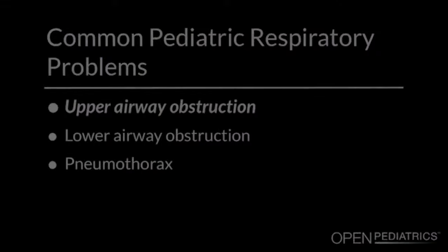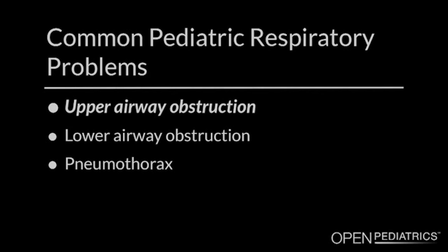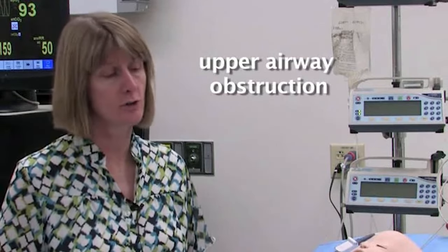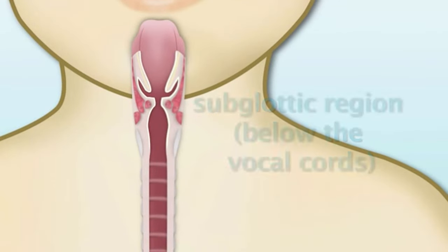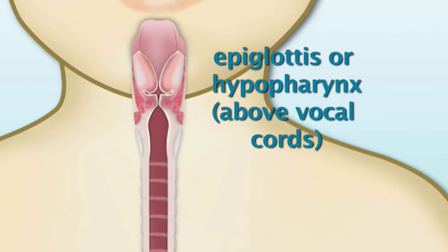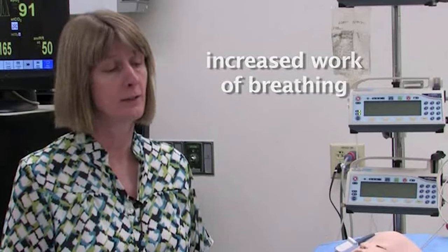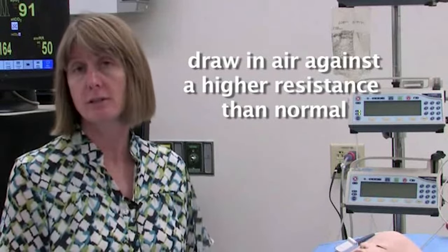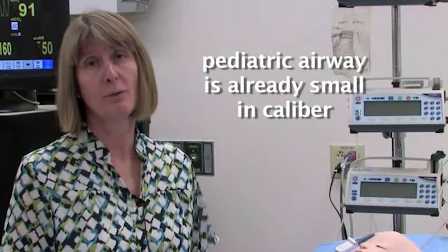Today I'm going to be talking about common respiratory problems that children can present with. Two of the most common are upper and lower airway obstruction. There's a whole set of conditions that can result in upper airway obstruction, but what they all have in common is typically some edema of the soft tissues of the upper airway, either in the subglottic region, below the vocal cords, or in the soft tissues above that, such as the epiglottis or hypopharynx, remembering that the pediatric airway is already fairly small in caliber.